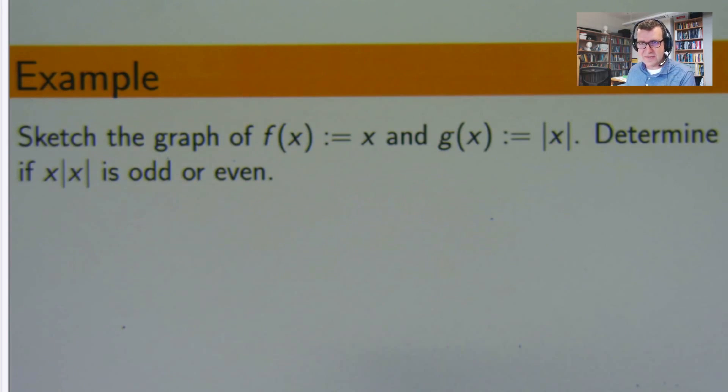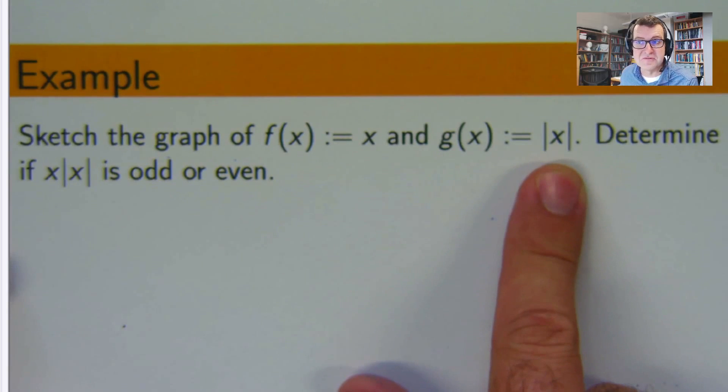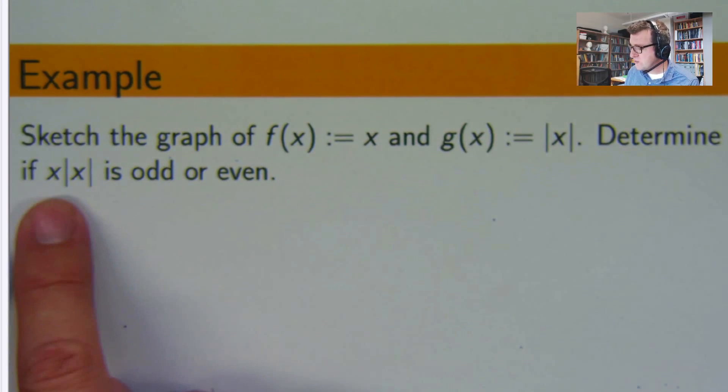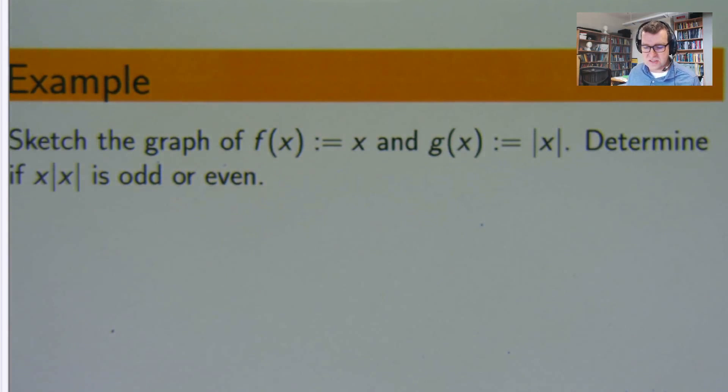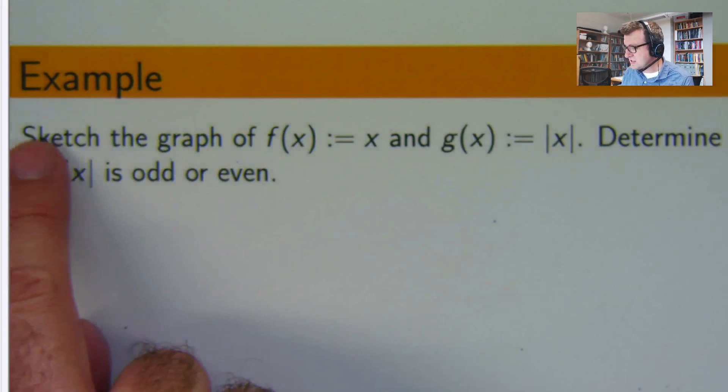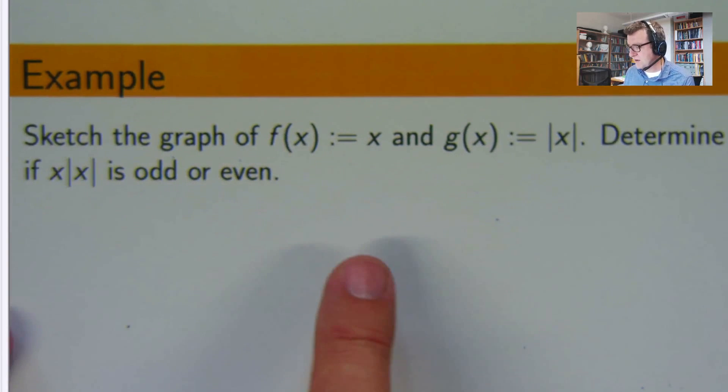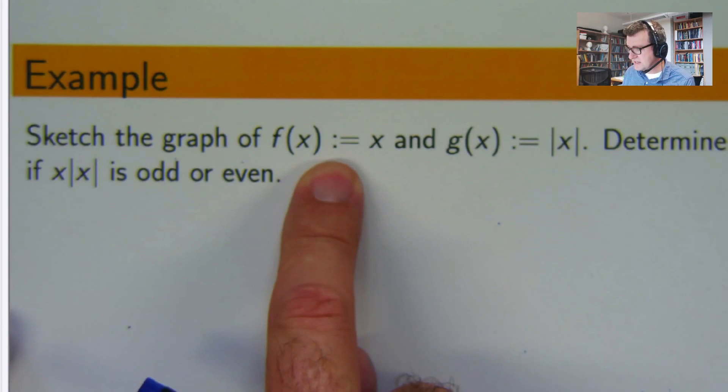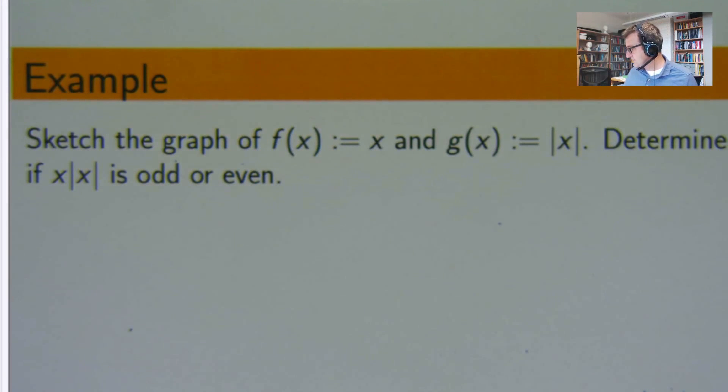So let's have a look at the question and we can work our way through it. Sketch the graph of this function f of x equals x and g of x equals absolute value of x and determine if the product x times absolute x is odd or even. Now there's a few ways of doing this problem, but I think they want you to work out whether this function is odd or even, this function is odd or even, and then see if the product is odd or even.